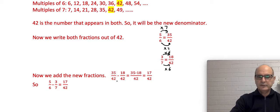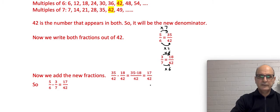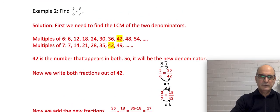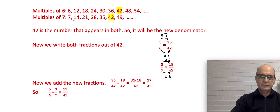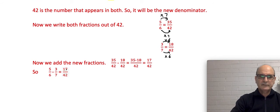Now that both fractions have the same denominator, it is easier to subtract. We have 35/42 minus 18/42. We keep the denominator 42 and subtract the numerators: 35 minus 18 equals 17. So the answer is 17/42. When subtracting 3/7 from 5/6, our answer is 17/42. Thank you for your attention.